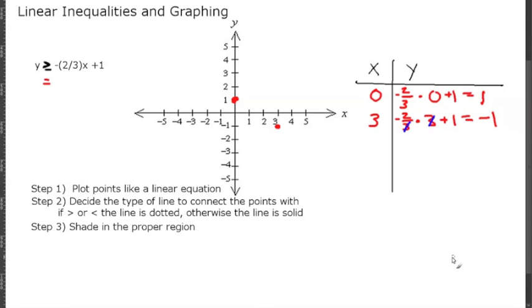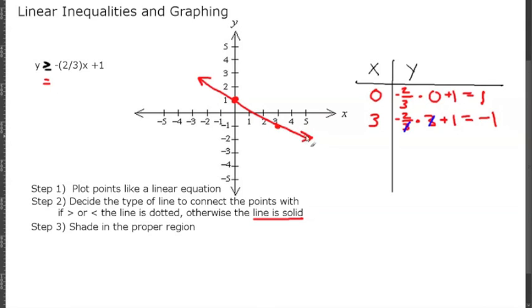Step 2 is to decide the type of line to connect the points with. We know this is a greater than or equal to inequality, so the line is going to be solid. Any point that falls on the solid line will be true for the inequality.